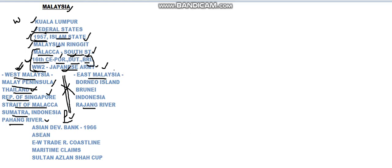East Malaysia is present on an island called Borneo Island. Borneo Island is divided amongst three nations: Malaysia as East Malaysia, Brunei, and Indonesia. These three different nations are present on a single island called Borneo Island. The bordering countries of East Malaysia are Brunei on its north and Indonesia on its south. There is a perennial river in East Malaysia called the Rajang River.